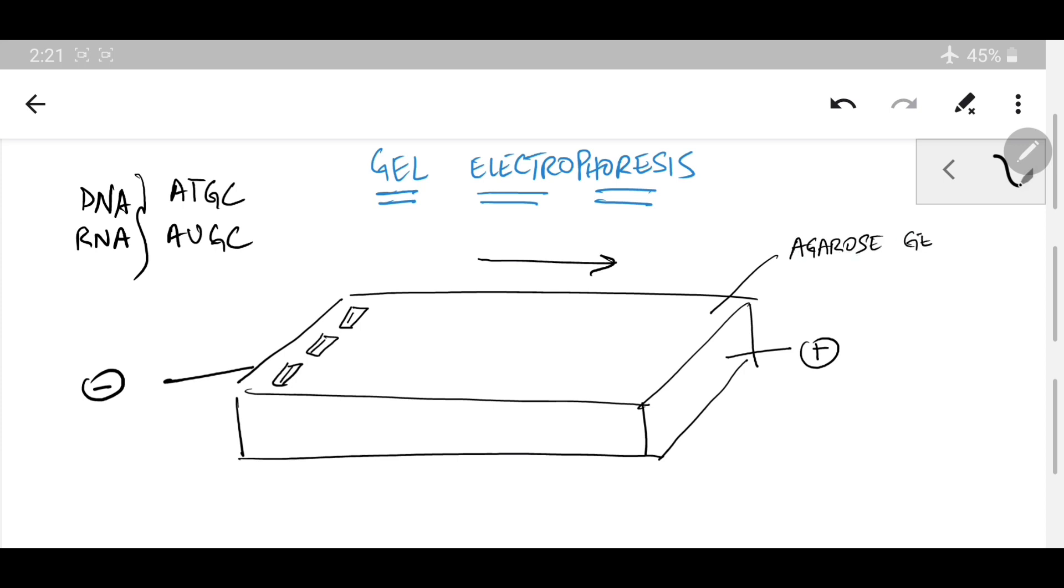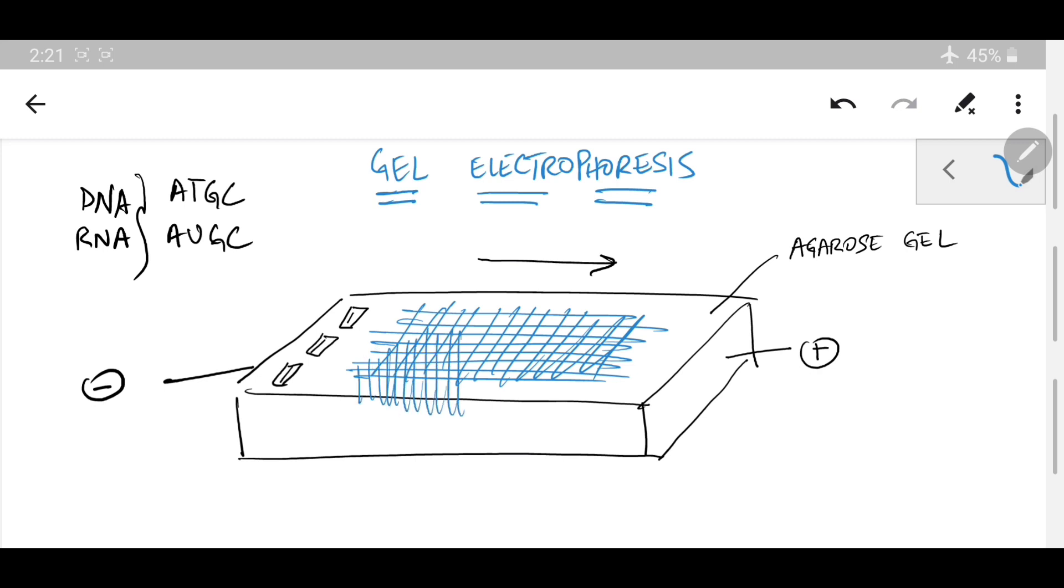So it has certain pores and holes in it for travel. So if you had to visualize this, you might want to visualize it something like this. It's a 3D agarose gel if I draw it somewhat correctly. So there are small pools, small holes in between for the fragments to travel through.